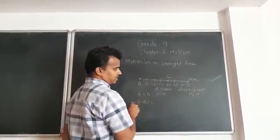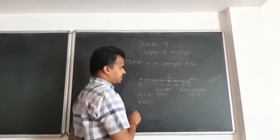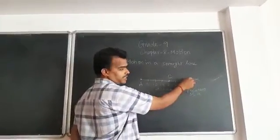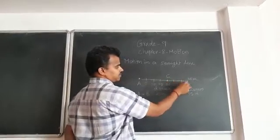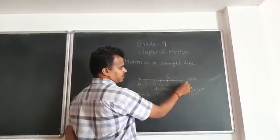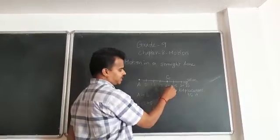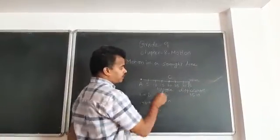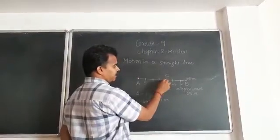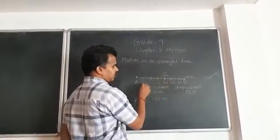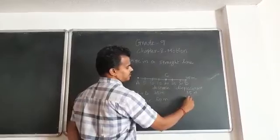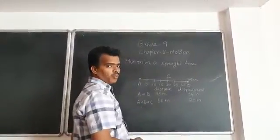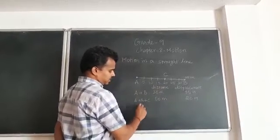Now suppose the person starts from A, reaches B, and then comes back to C. From A to B the distance is 35 meters. From B to C, since C is at 20 meters, the distance is 15 meters. So total distance is 50 meters. But the displacement — the shortest distance between A and C — is only 20 meters.